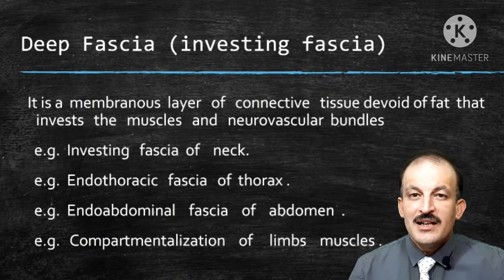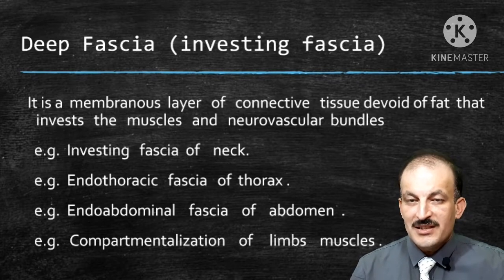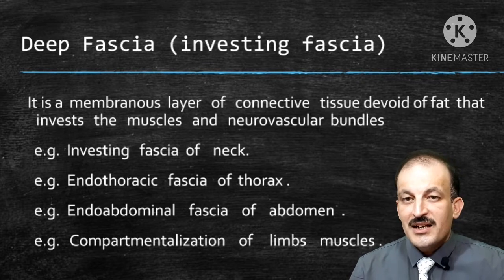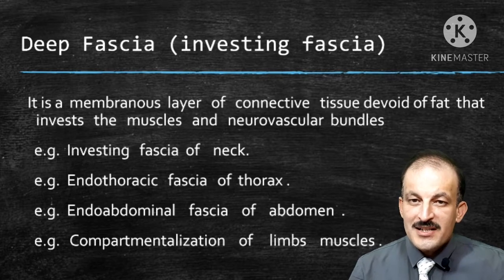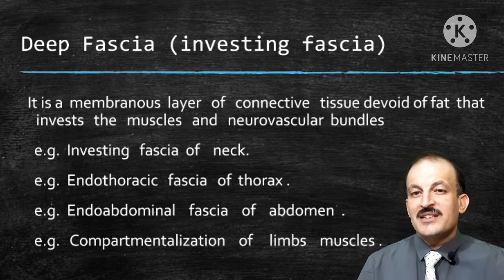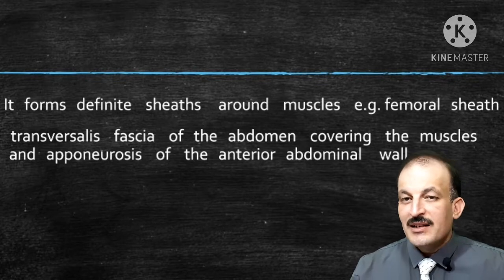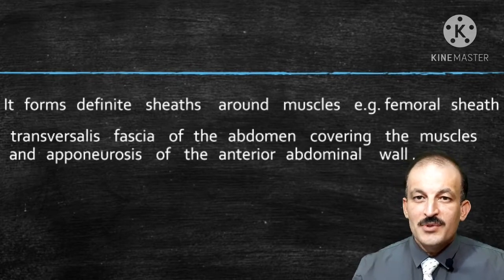The second type is the deep fascia, also called the investing fascia, because it invests the deeper structures of the human body. It is a membranous layer of connective tissue devoid of fat that invests the muscles and neurovascular bundles. Examples include the investing layer of deep cervical fascia of the neck, endothoracic fascia of the thorax, and endo-abdominal fascia of the abdomen. It acts as compartmentalization of the limb muscles and forms different sheaths around muscles, such as the femoral sheath and transversalis fascia of the abdomen.